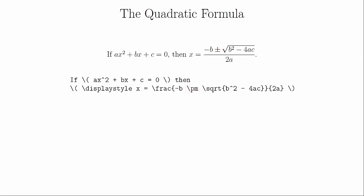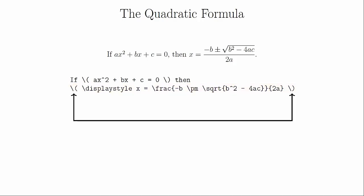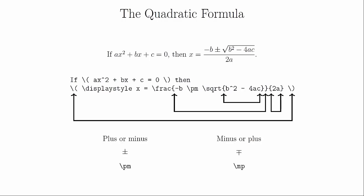The most obvious mathematical equation to write down with this is the quadratic formula. Notice that we used \pm for the plus or minus symbol. There are a few things to pay attention to here: LaTeX does not start a new paragraph unless there is a blank line. We put the full equation on its own line because it makes it easier to read. All the brackets are matched up — from the ones that create the math mode, to the ones that are part of the \frac command, to the ones that are part of the \sqrt command. Every bracket you open must be closed. If you wanted a minus or plus symbol instead, you would use \mp.